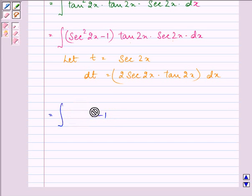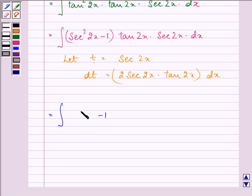Here since secant 2x is taken as t, so it will be t square minus 1 into dt divided by 2.